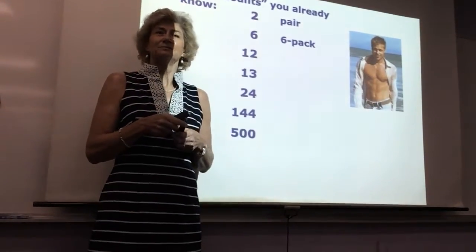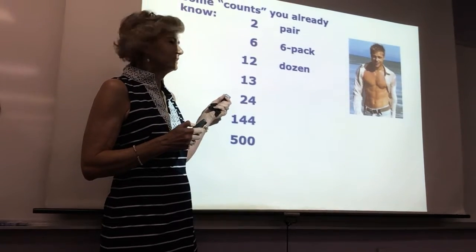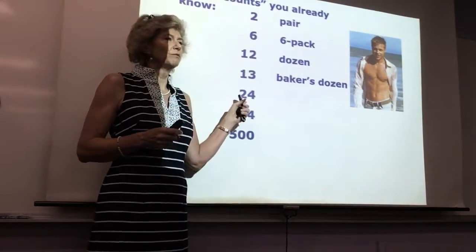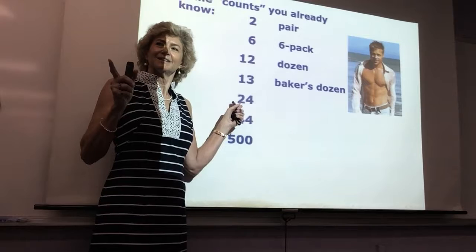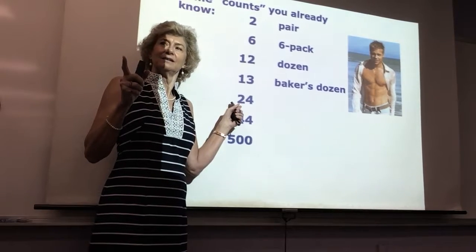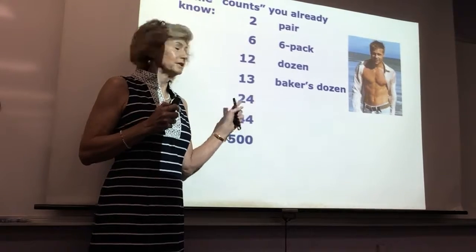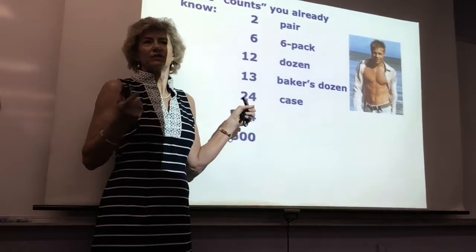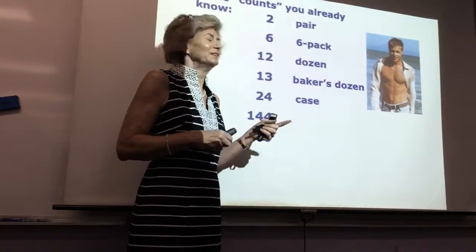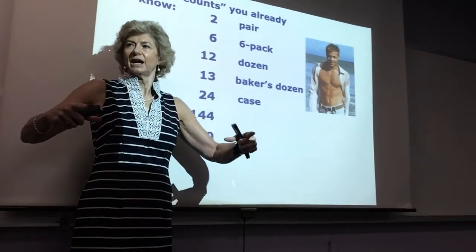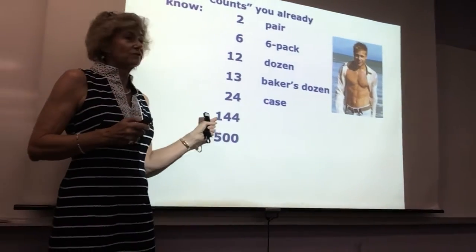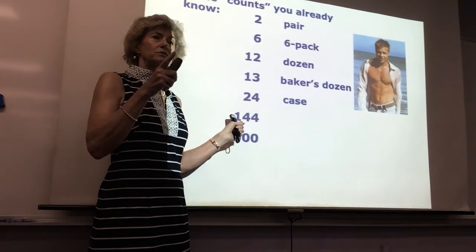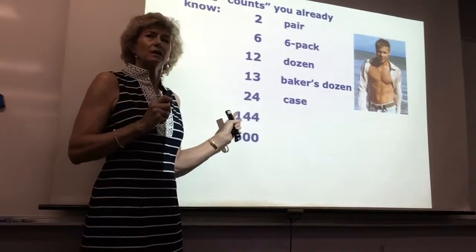What's 12 of a kind called? Unlucky number, no. Baker's dozen, supposedly they get rid of donuts, give you an extra donut at the end of the day. 24? Two dozen. It's not two dozen, it has a word. It's called a case. Here in Singapore they call it a flat. 144? Has a name, not a dozen dozen. It's a gross.